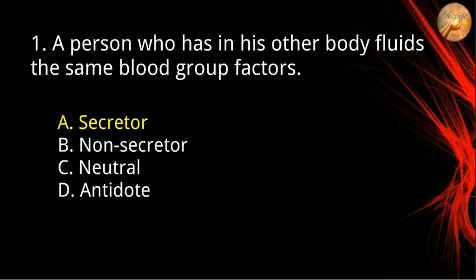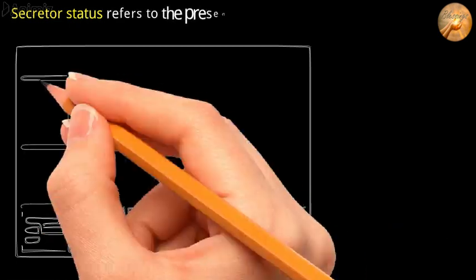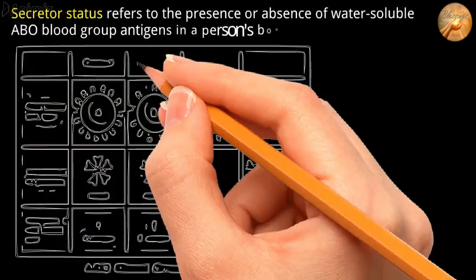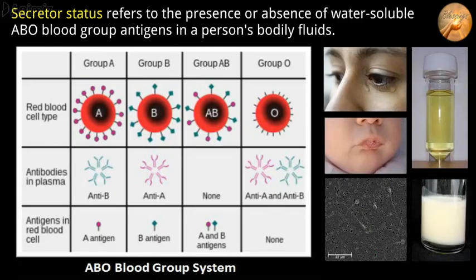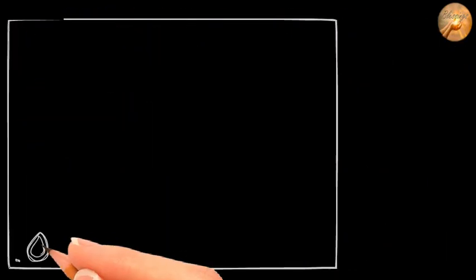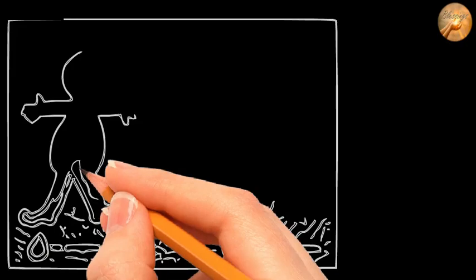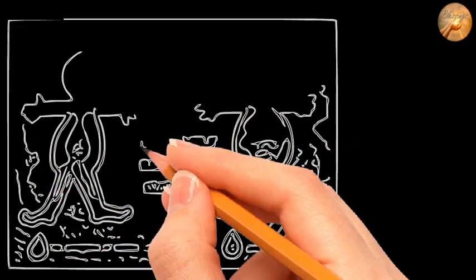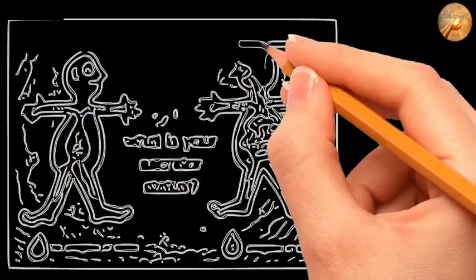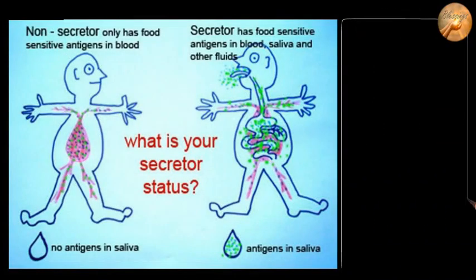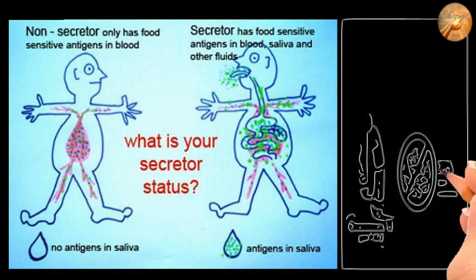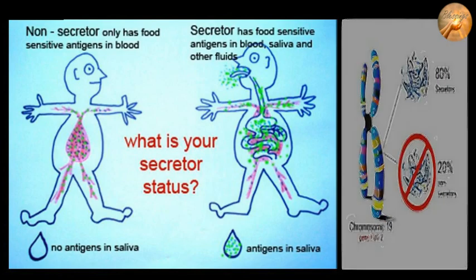Secretor status refers to the presence or absence of water-soluble blood group antigens in a person's bodily fluids, such as saliva, tears, breast milk, urine, and semen. People who secrete these antigens in their bodily fluids are referred to as secretors, meaning that antigens present in the blood are also found in other body fluids. People who do not are called non-secretors because they have only antigens in their blood.